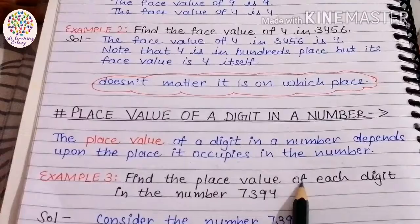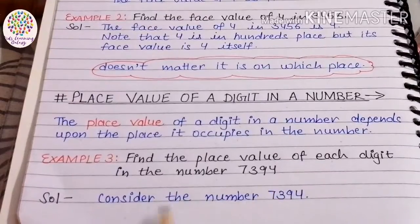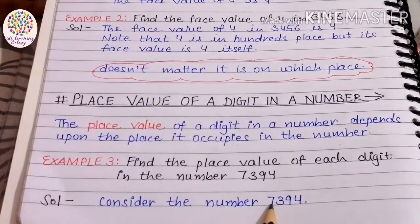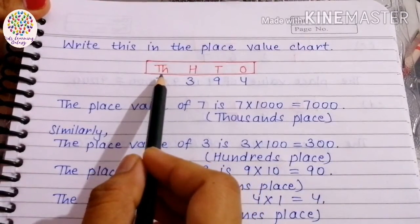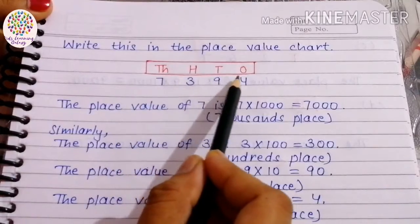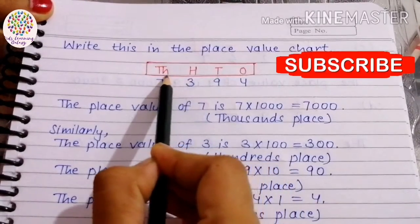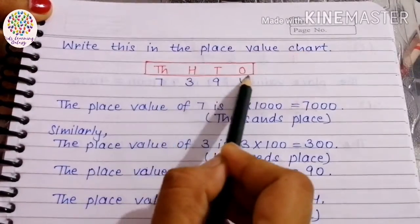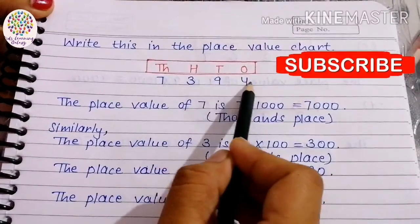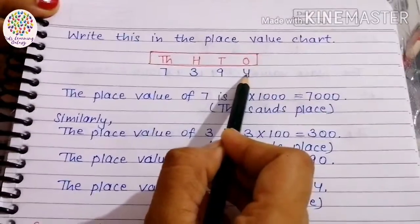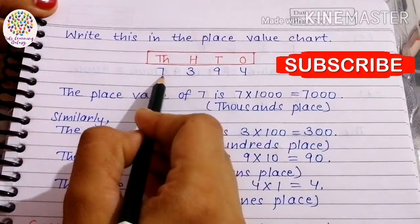Find the place value of each digit in the number 7394. We will write the given number in the place value chart. The place value chart has: ones, tens, hundreds, thousands. So we write: 4 under ones place, 9 under tens place, 3 under hundreds place, 7 under thousands place.